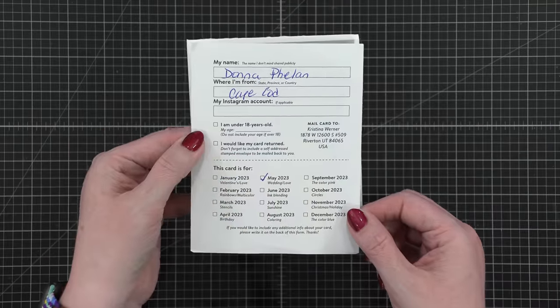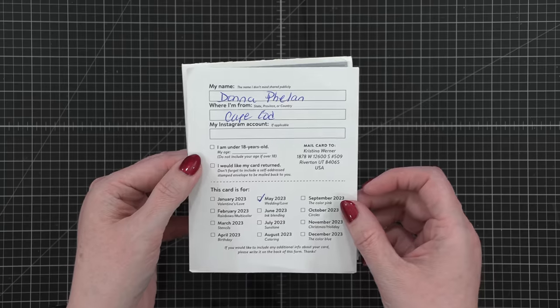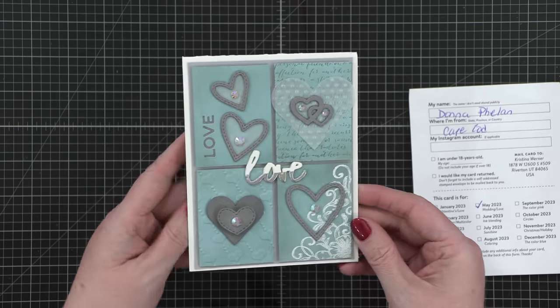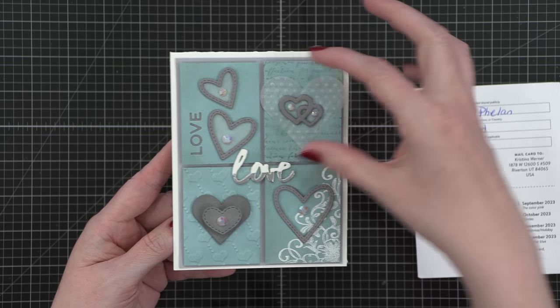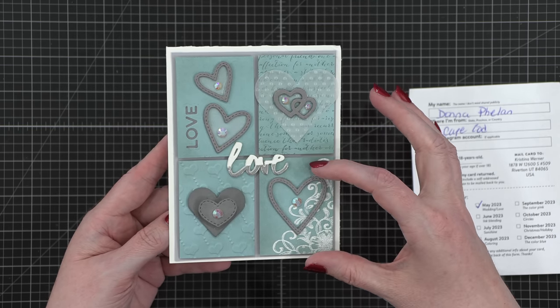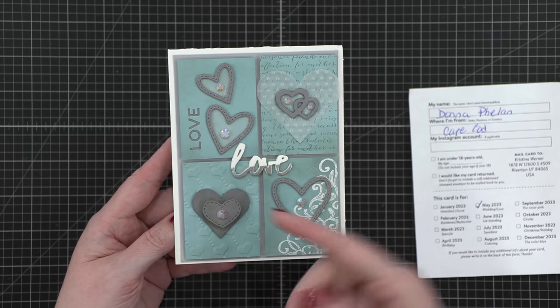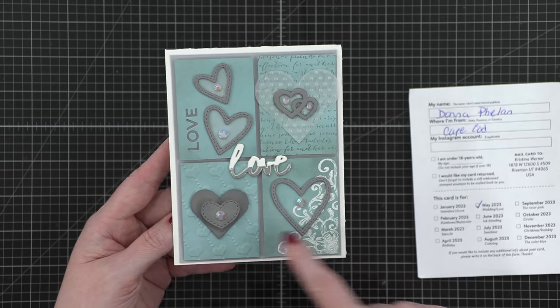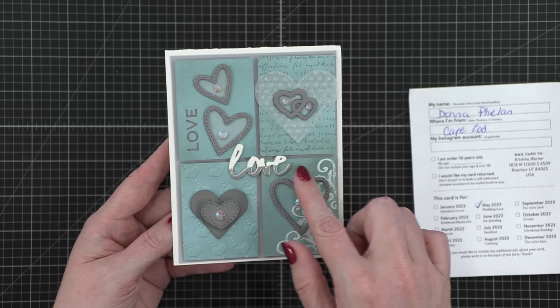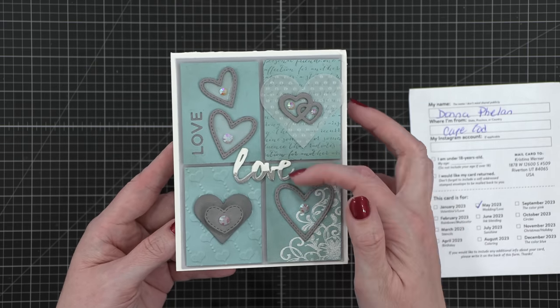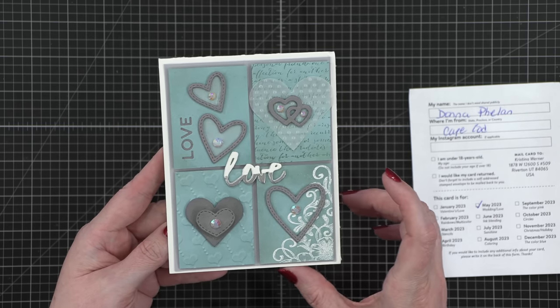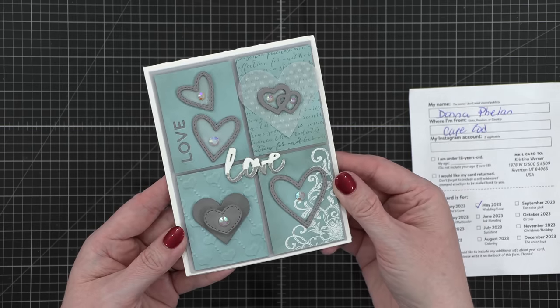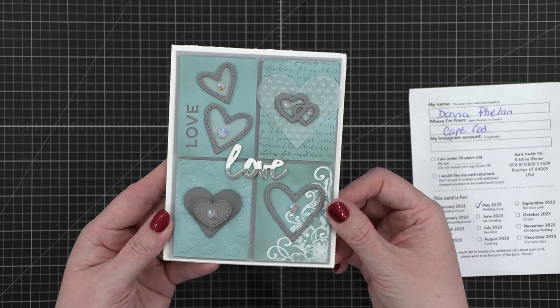This next card is from Donna from Cape Cod, Massachusetts. This is for the month of May for the wedding love theme. And I thought this was just so fun because the way she's designed this, it's almost like four little separate little designs and then put them together. And they all are cohesive because they not only use the same colors and kind of the same imagery, but then she's overlapped them with this greeting, which is half white, half silver. So creative and fun. And then inside it says happy anniversary. Such a really fun card. Lots of design went into this and it looks beautiful.